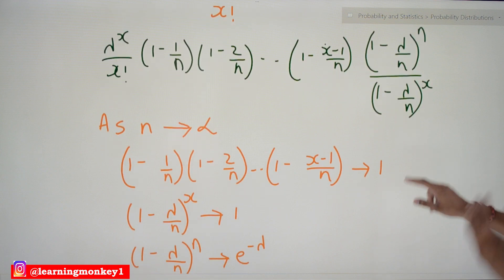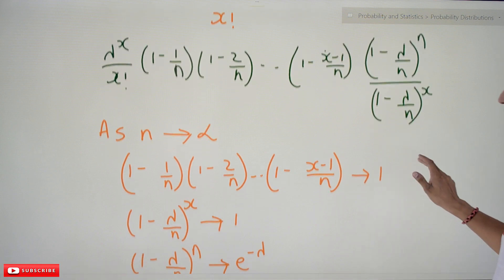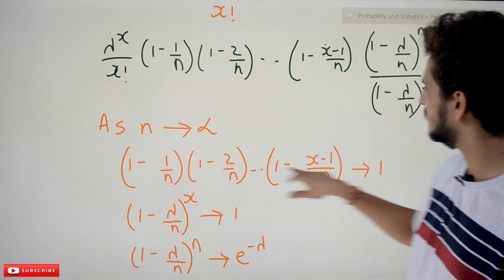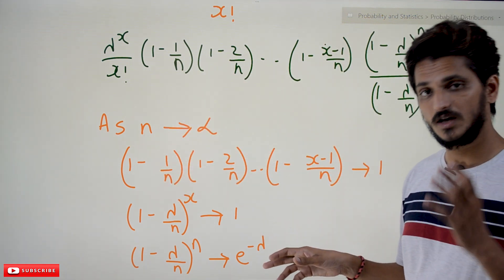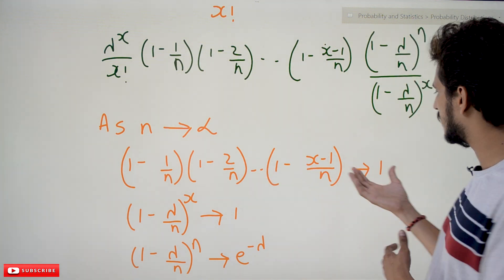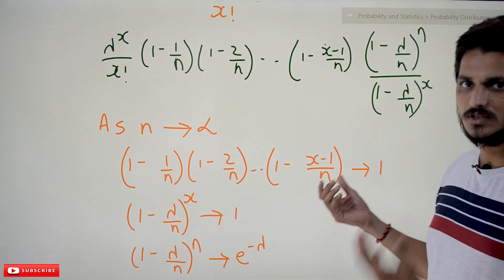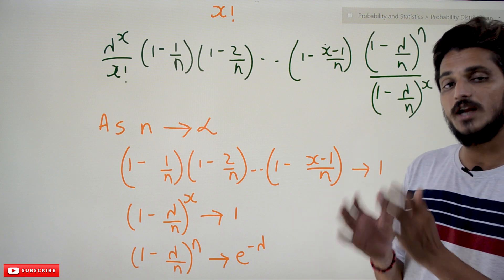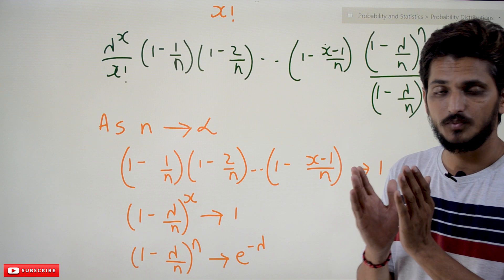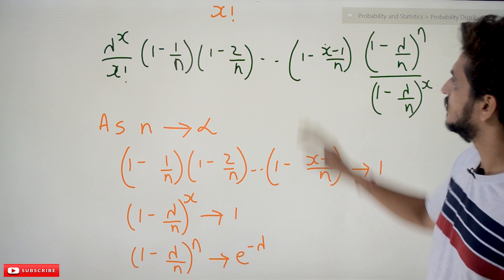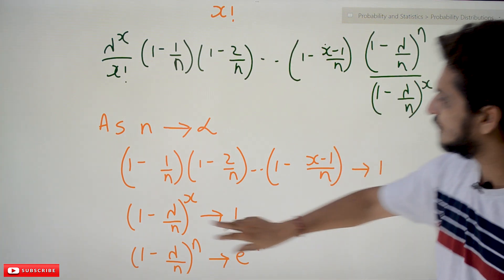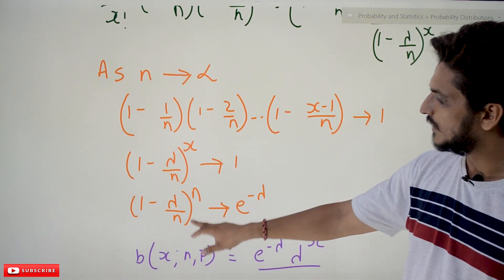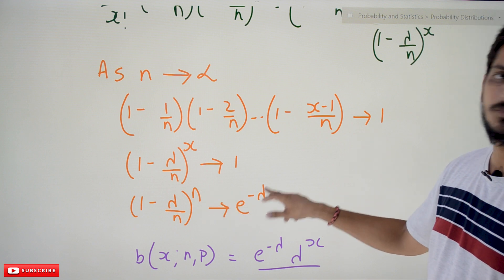From standard limit results, as n tends to infinity: the product 1·(1−1/n)·…·(1−(x−1)/n) tends to 1, and (1−λ/n)^x also tends to 1. Meanwhile, (1−λ/n)^n tends to e^(−λ). We accept these results from standard calculus without full proof as they are beyond this syllabus.